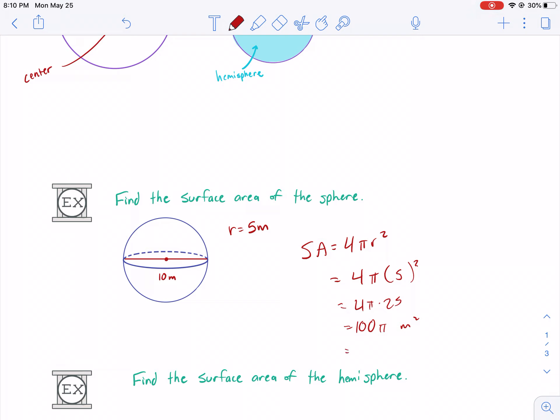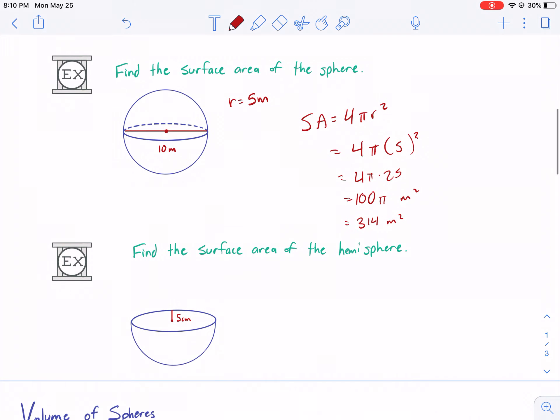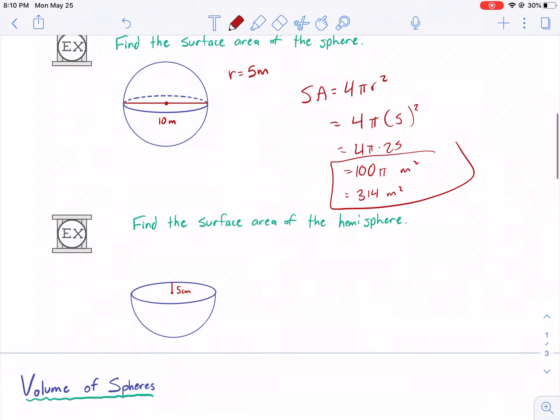If we wanted to multiply that out, we'd do 3.14, 314 meters squared, approximately. 3.14159, so it's about 314 meters squared. I like it in terms of pi, but I just wanted to show you both.